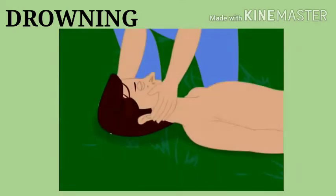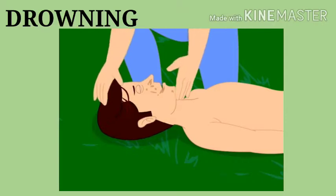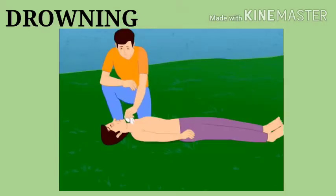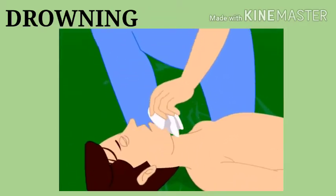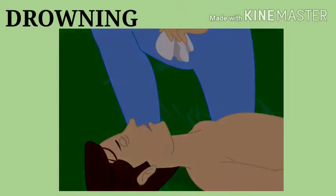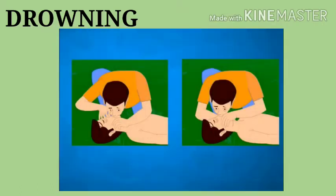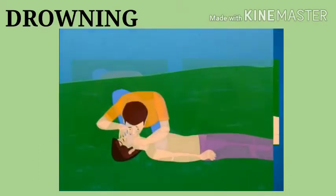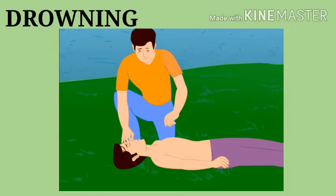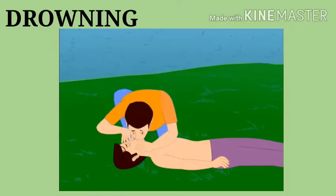First, check the mouth for obstruction, lift the neck and tilt the head back, and clear the airway. In mouth-to-mouth respiration, close the nostrils of the victim, place your mouth over the victim's mouth, and blow air into the mouth. Take your mouth away and look for chest expansion. Repeat this 10 to 15 times per minute.